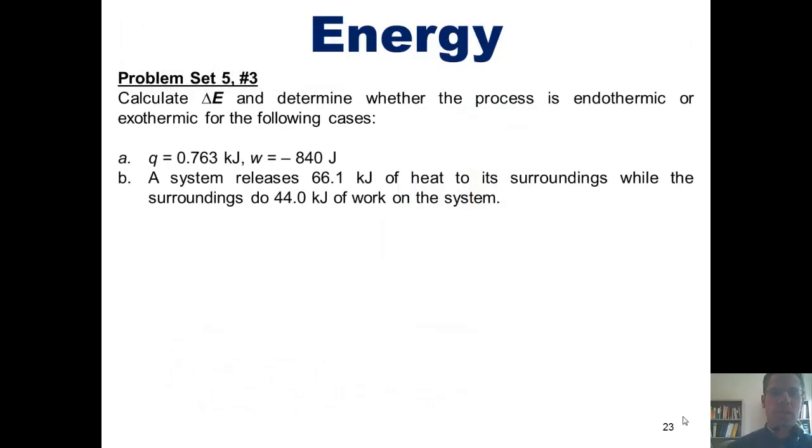So here's another question. Calculate delta E and determine whether the process is endothermic or exothermic for the following cases. A. Heat equals 0.763 kilojoules and work equals negative 840 joules. And B. A system releases 66.1 kilojoules of heat to its surroundings, while the surroundings do 44 kilojoules of work on the system.